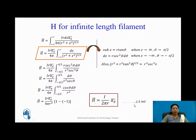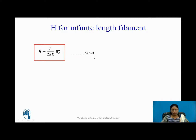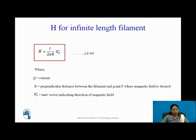This is the equation for the magnetic field intensity for an infinite length filament: H-bar = I / (2πr) aφ amperes per meter. Here I is the current flowing through the filament, r is the perpendicular distance between the filament and the point P where we desire the magnetic field (a scalar quantity), and aφ-bar is the unit vector indicating the direction of the magnetic field.